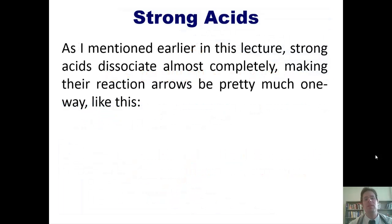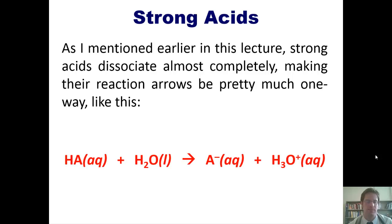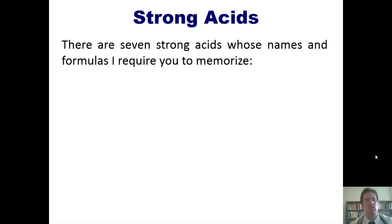As I mentioned earlier in a previous video, to which I'll link here, strong acids dissociate almost completely, making their reaction arrows be pretty much one way, like this, where I have my acid, my base, my conjugate base, and my conjugate acid. Now, there are seven strong acids whose names and formulas I require you to memorize. Those acids are these.